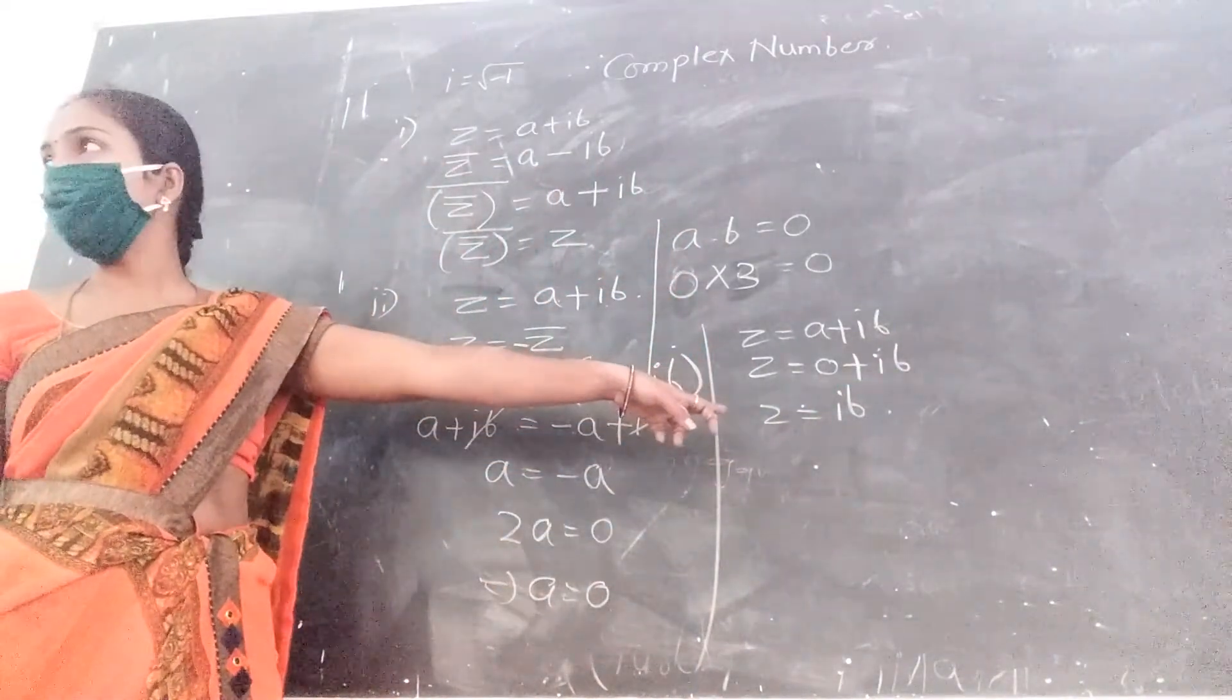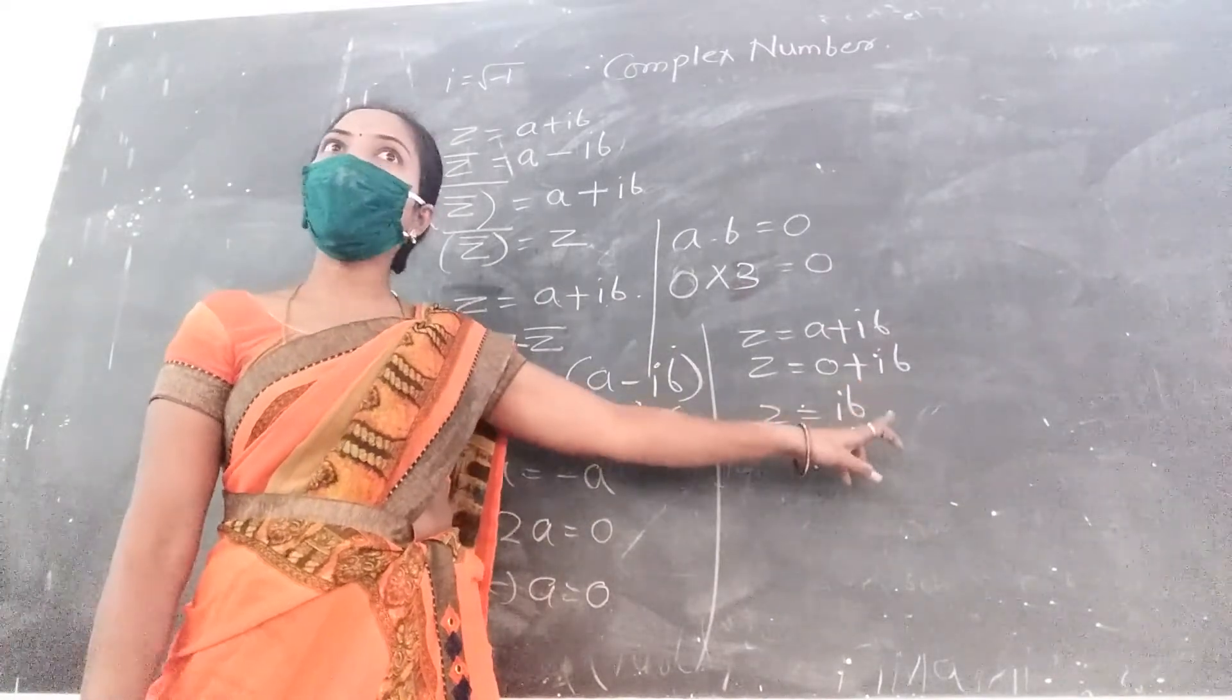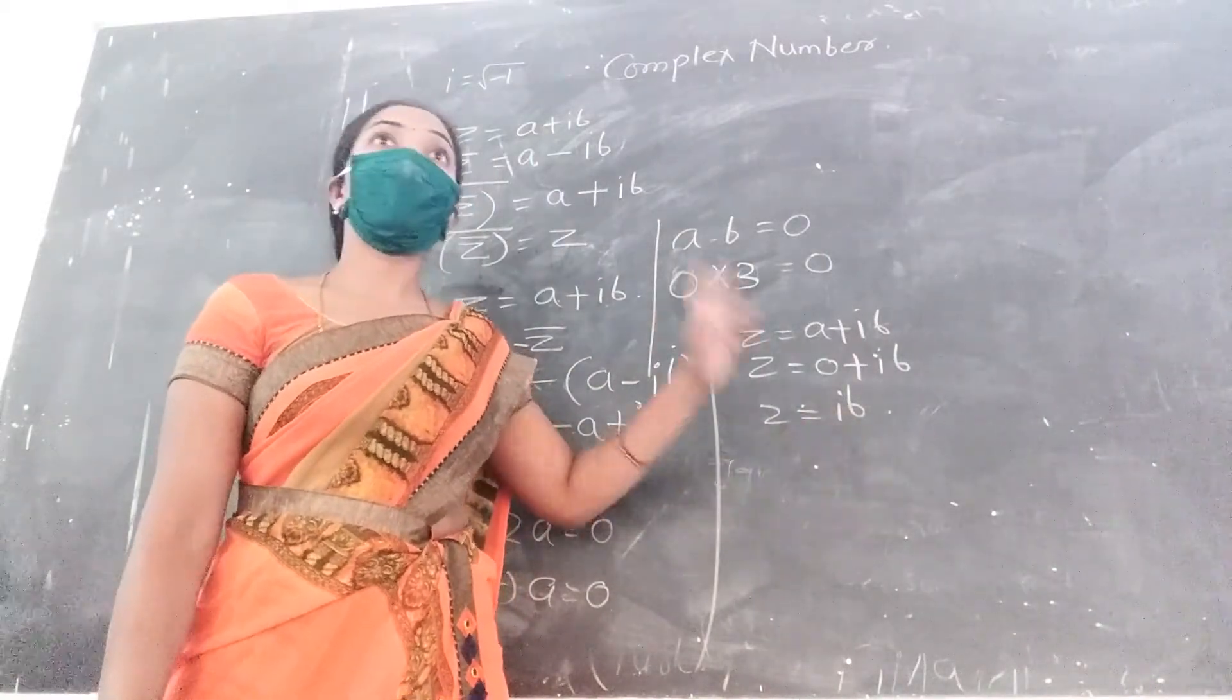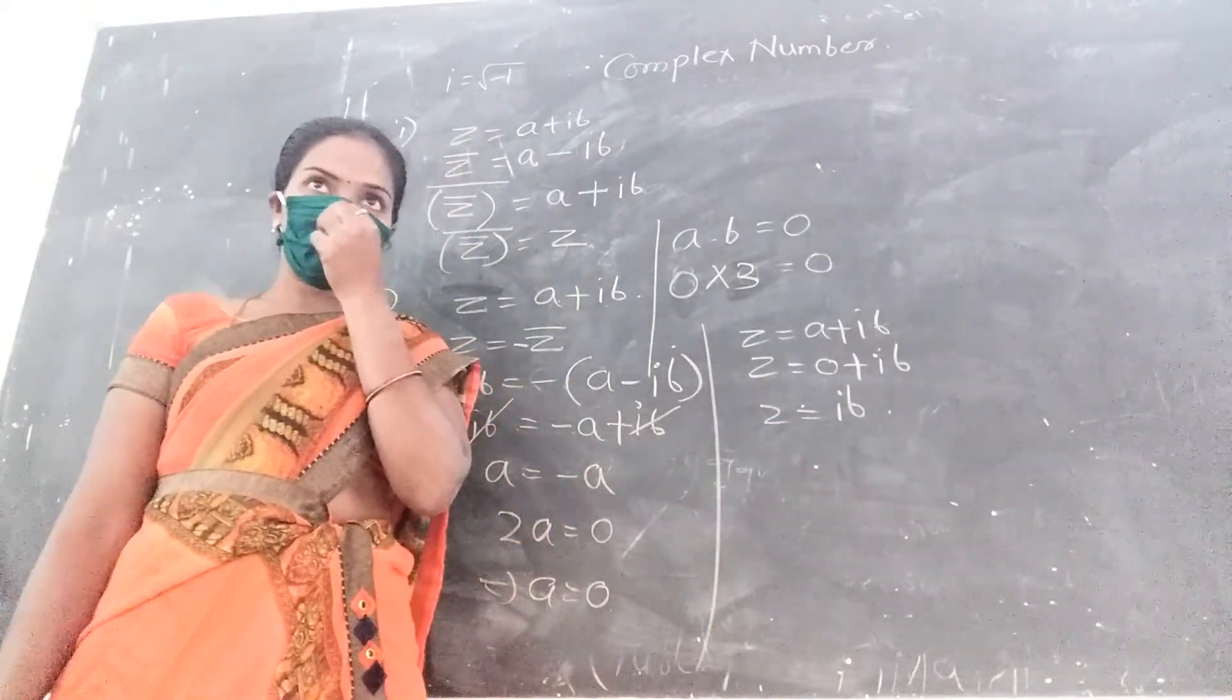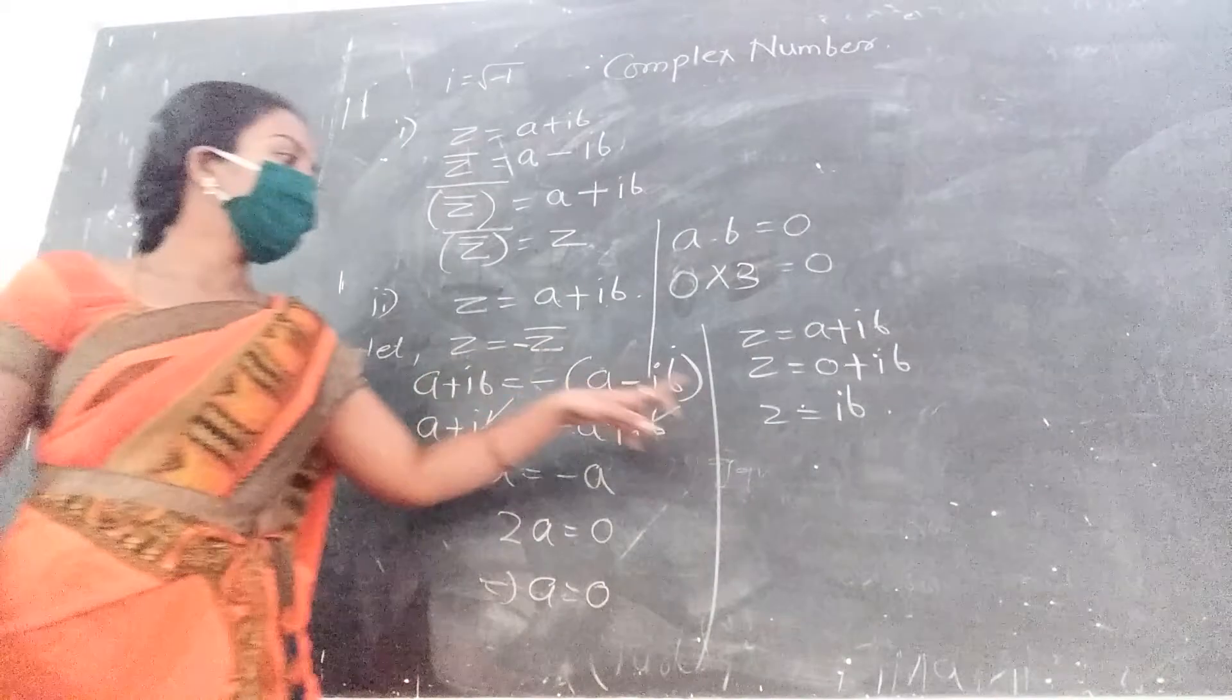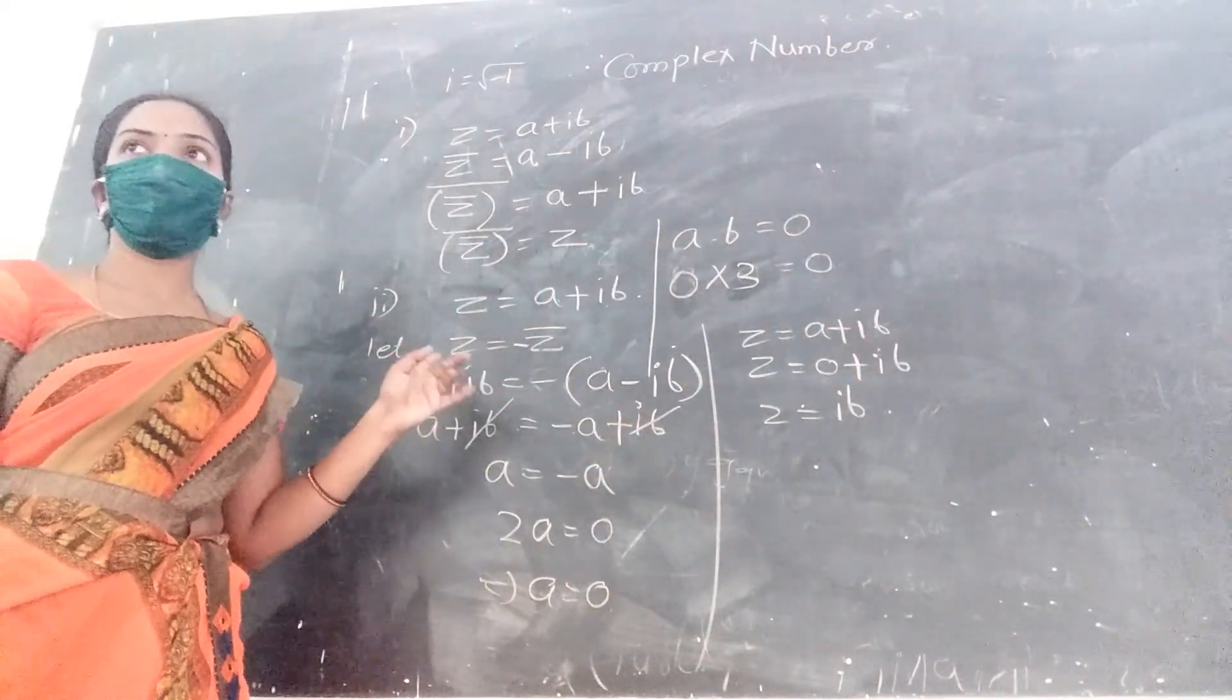Where z is purely imaginary. I into b means z is a purely imaginary. There is no part of real number. A means real, ib means imaginary part. Therefore it is not real. This means z is purely imaginary. If z equal to minus z bar, then z is purely imaginary. This is the next property.